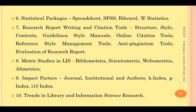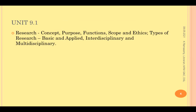We also cover the calculation of impact factor for journals, the research impact of institutions, authors' h-index, g-index, and i10-index, and finally current trends in library and information research. This is the whole panorama of Unit 9 Research Methodology. Let us see these 10 components one by one, starting with the fundamental concepts related to research.